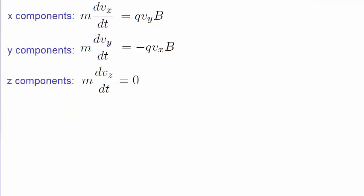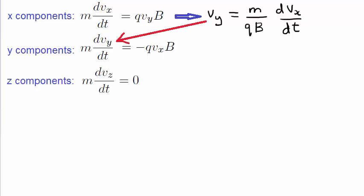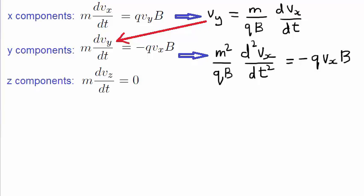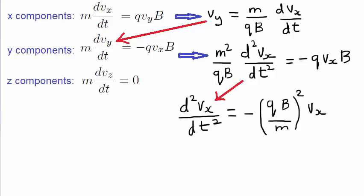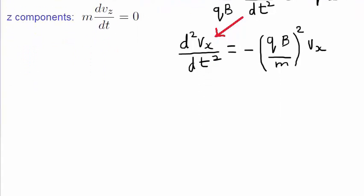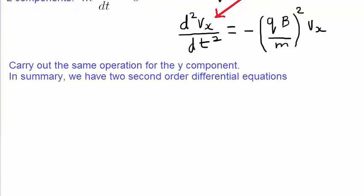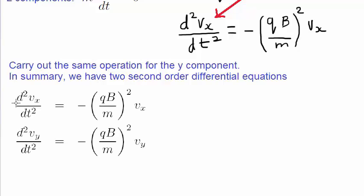Now let's rearrange the top equation so that we make vy the subject, and substitute this into the y component equation. That means we now end up with a second-order differential equation in vx. Rearranging this resulting expression, the second-order derivative is on the left-hand side by itself. We can carry out the same procedure for the y component, so as a summary, we end up with two second-order differential equations: one for vx and one for vy.